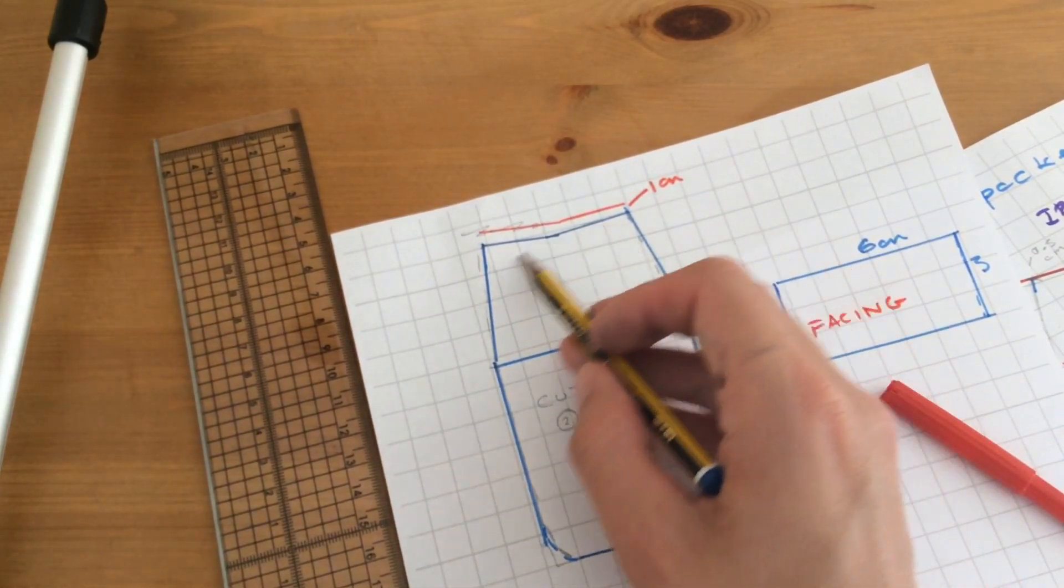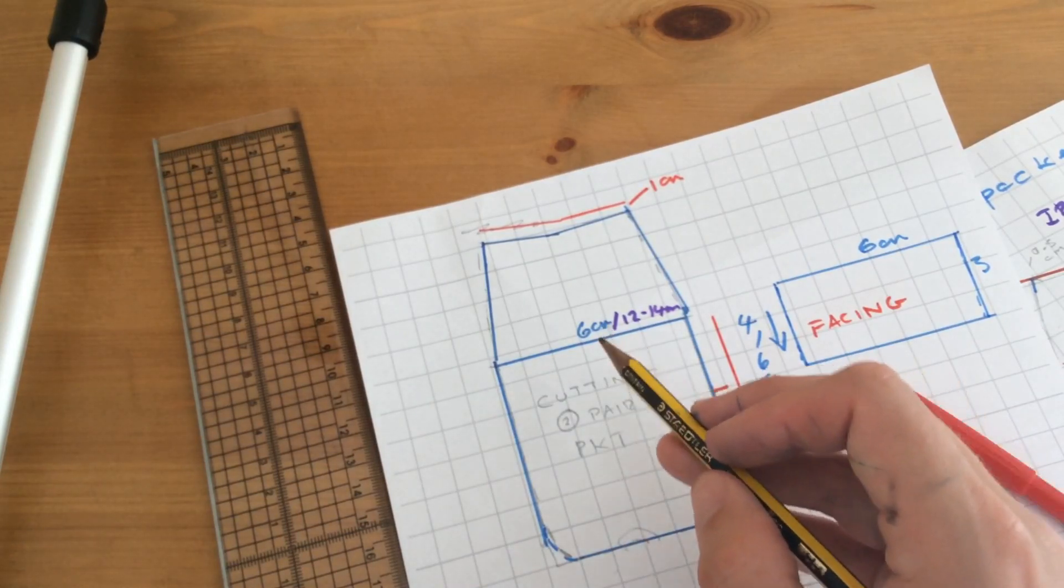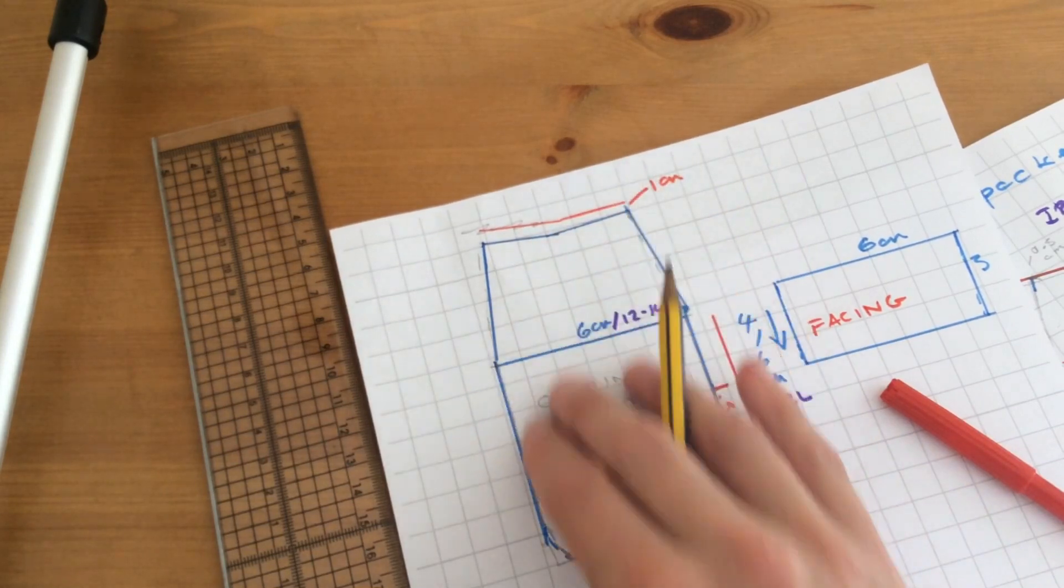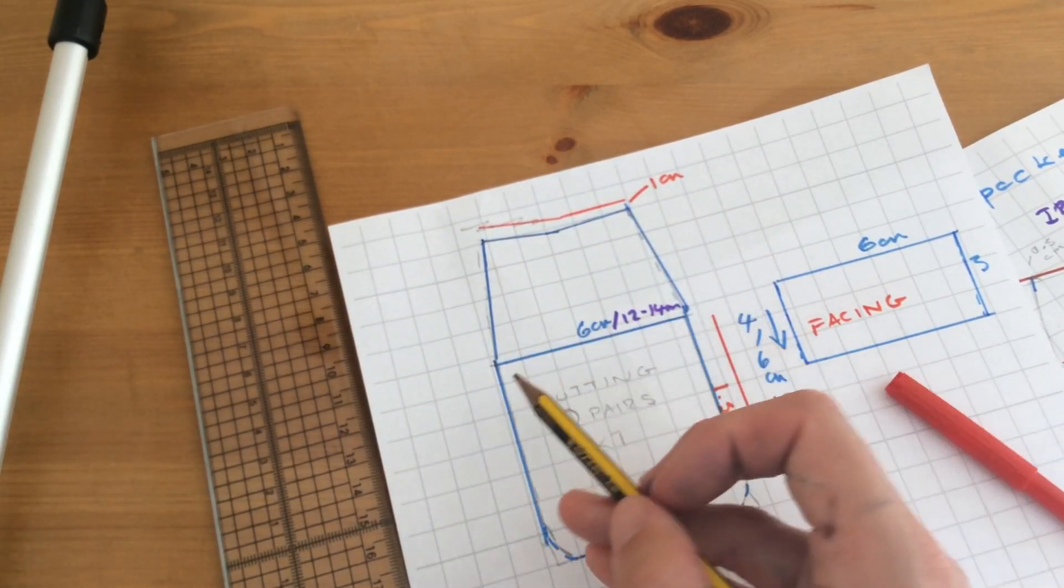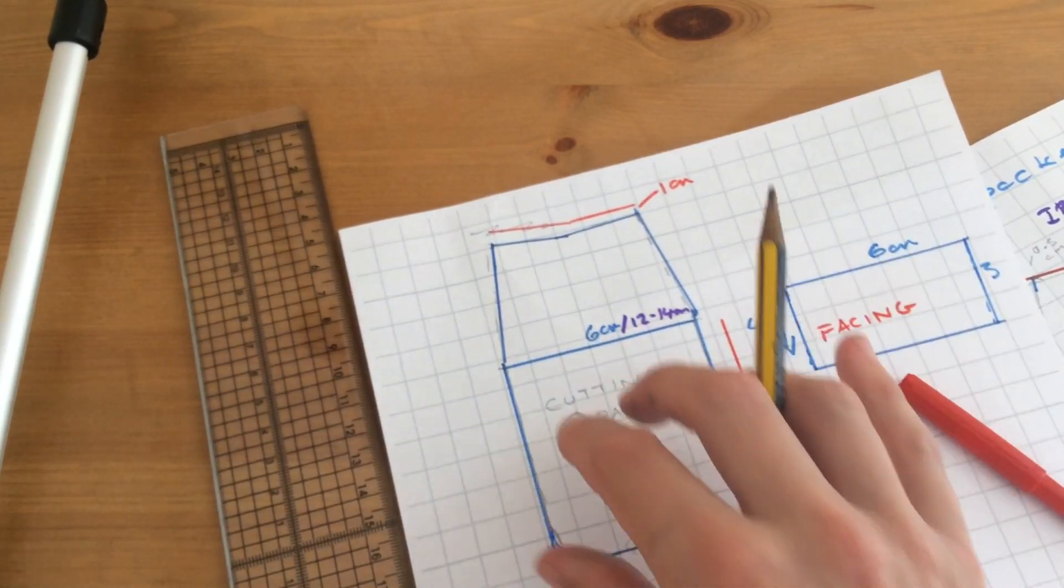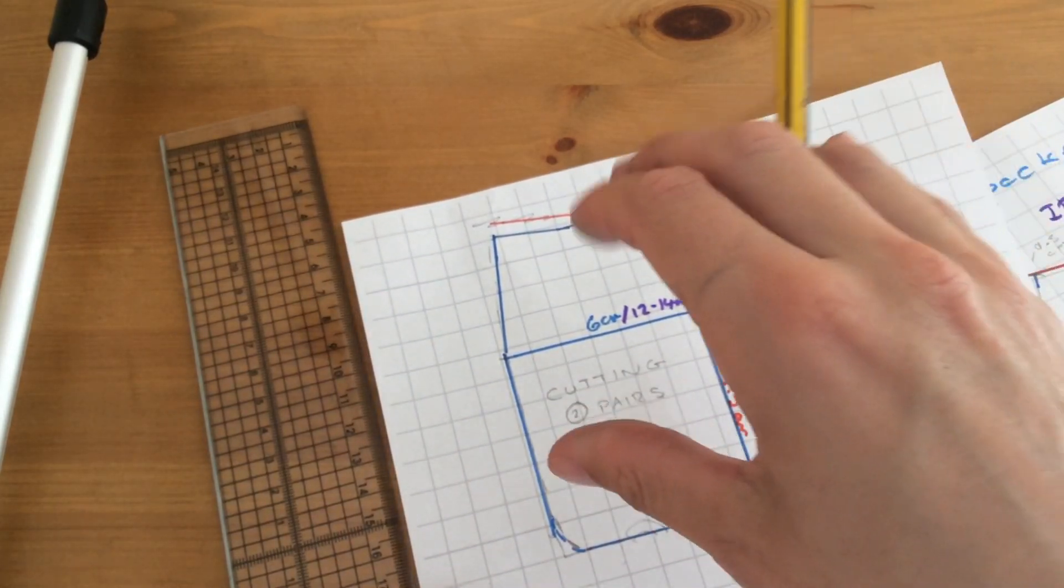This is one piece. In some pattern cutting books or some methods, people have one whole piece and the under piece is split in half along where you're sewing. So this is just one method. This was the same method that was used in the workshop for sewing.